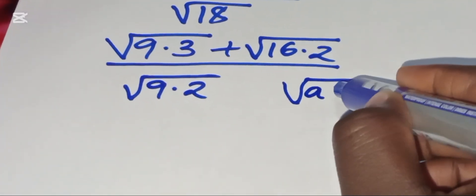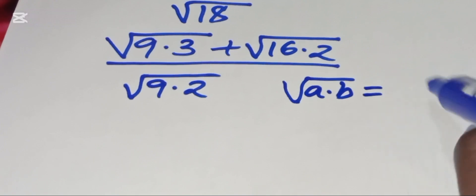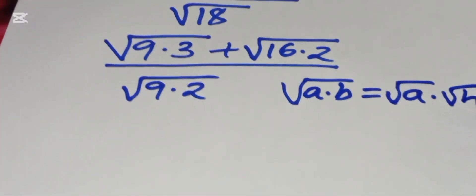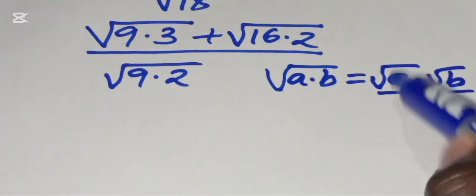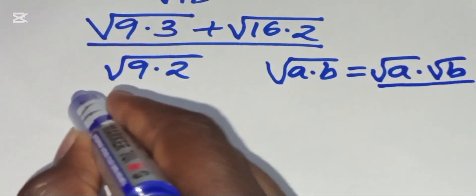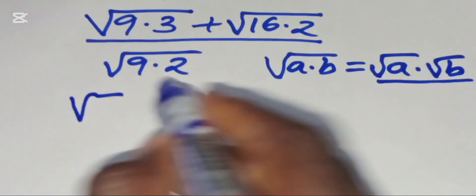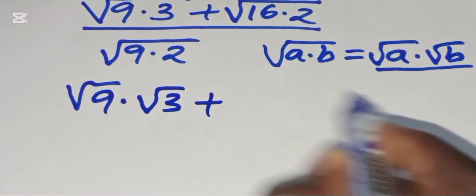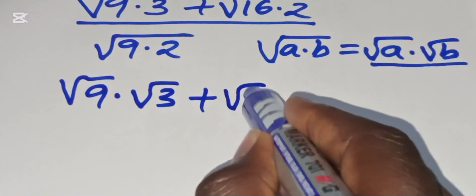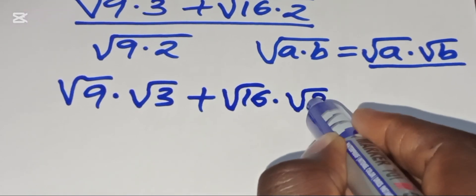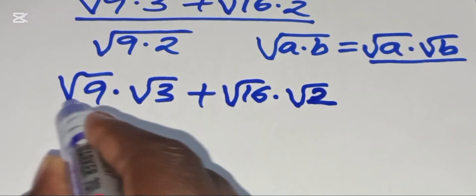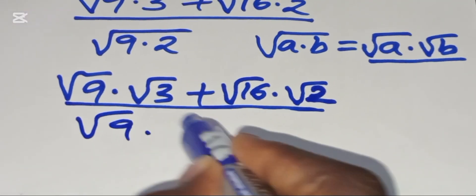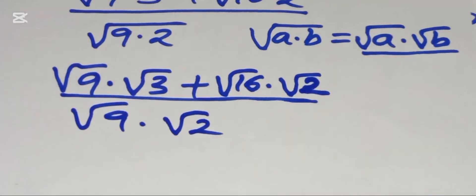Now, the property we use is that the square root of a multiplied by b can be expressed as the square root of a multiplied by the square root of b individually. Applying this property, in the numerator we have square root of 9 multiplied by square root of 3, plus square root of 16 multiplied by square root of 2, divided by square root of 9 multiplied by square root of 2.